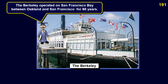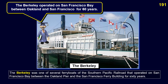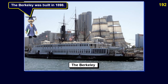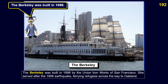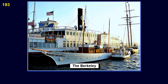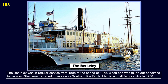The Berkeley was one of several ferry boats of the Southern Pacific Railroad that operated on San Francisco Bay between the Oakland Pier and the San Francisco Ferry Building for 60 years. The Berkeley was built in 1898 by the Union Iron Works of San Francisco. She served after the 1906 earthquake, ferrying refugees across the bay to Oakland. The Berkeley was in regular service from 1898 to the spring of 1958, when she was taken out of service for repairs and never returned, as Southern Pacific decided to end all ferry service in 1958.